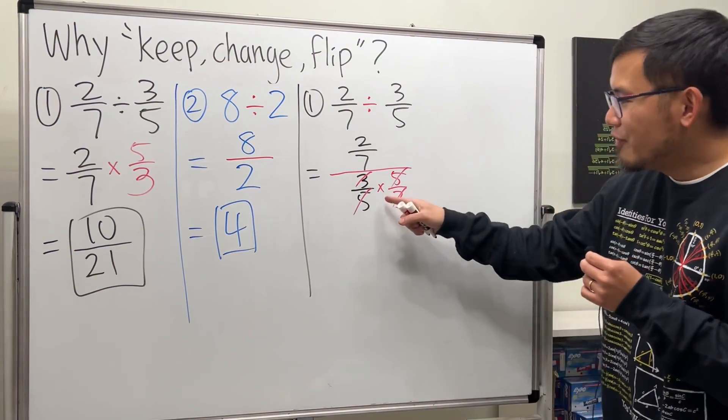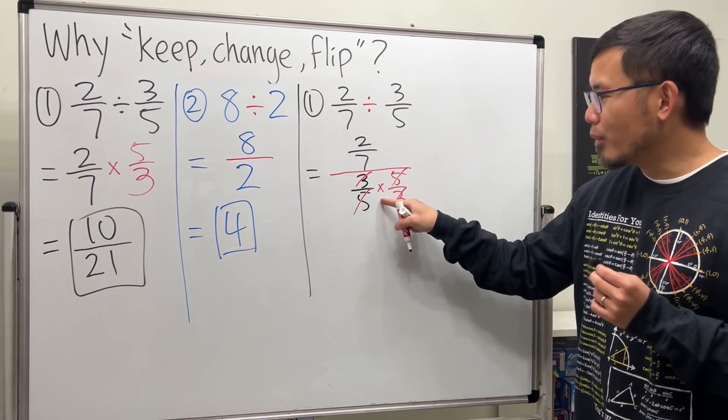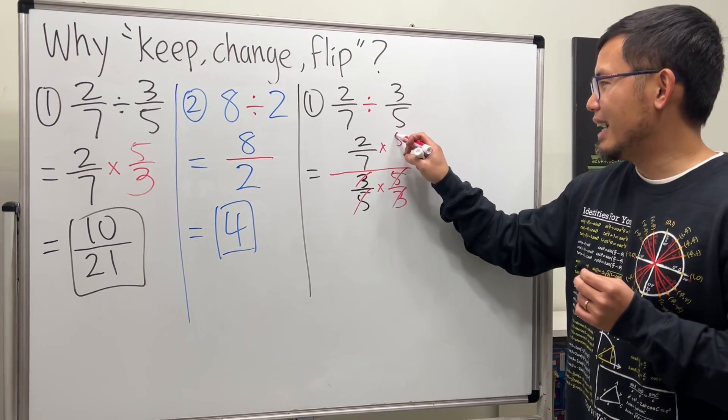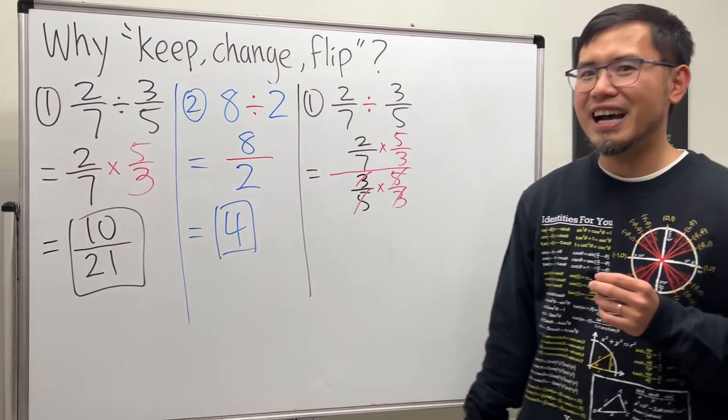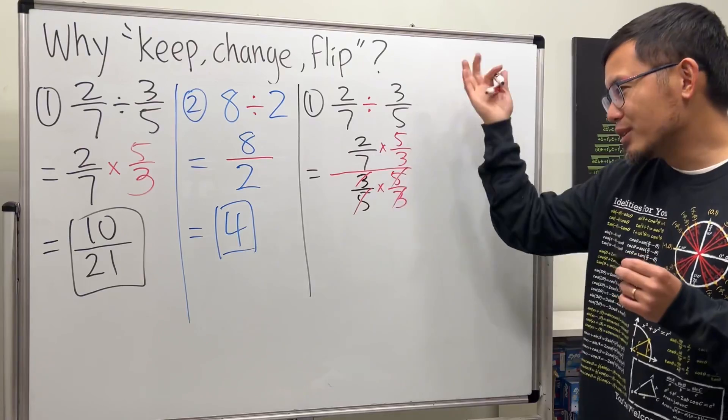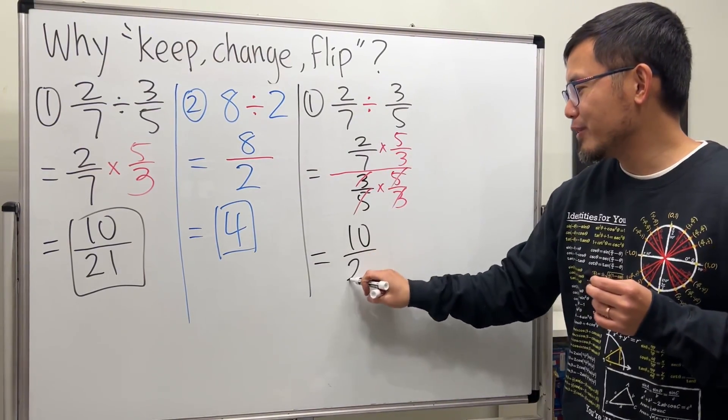And remember, whatever you do to the bottom, you do the same thing on the top. So, we multiply by 5 over 3 on the top as well, just like that. This is why. And of course, now you can work that out. And you will get 10 over 21. That's it.